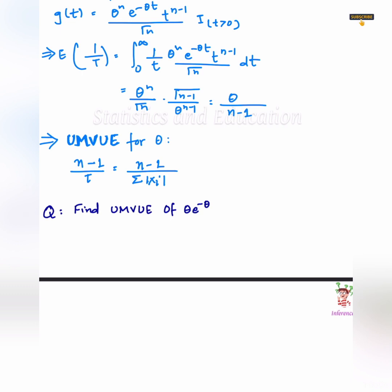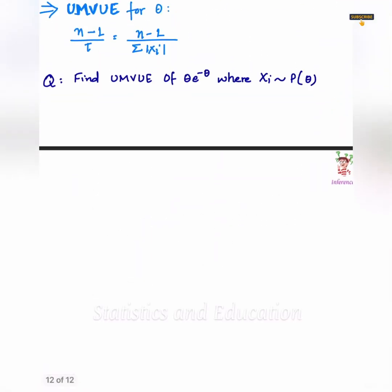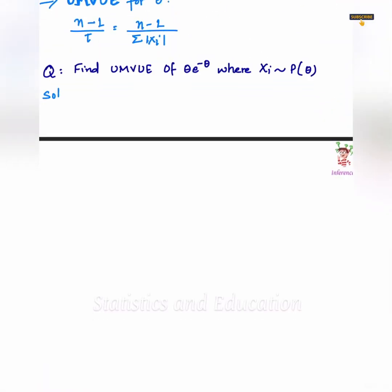Question 1. We have to find UMVUE of theta e to the power minus theta where xi belongs to Poisson theta. If you look closely, this is nothing but probability x equals to 1 where x belongs to Poisson theta. Now, I will simply write the joint density function, that is the likelihood function.